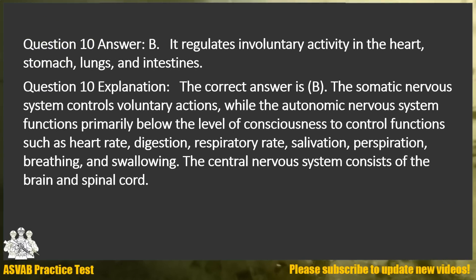Answer: B. It regulates involuntary activity in the heart, stomach, lungs, and intestines. Explanation: The correct answer is B. The somatic nervous system controls voluntary actions, while the autonomic nervous system functions primarily below the level of consciousness to control functions such as heart rate, digestion, respiratory rate, salivation, perspiration, breathing, and swallowing. The central nervous system consists of the brain and spinal cord.